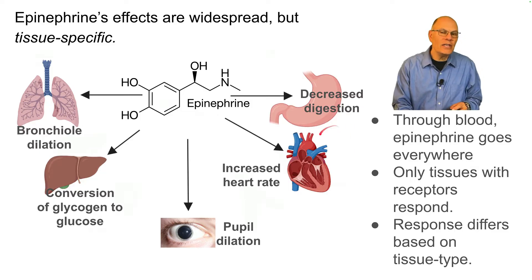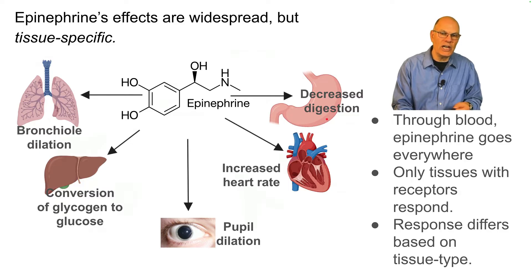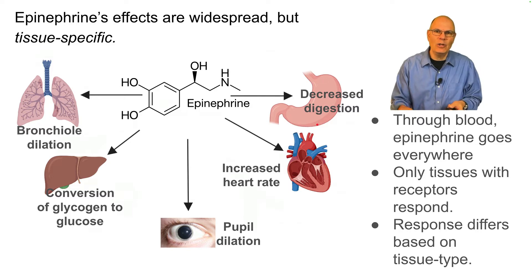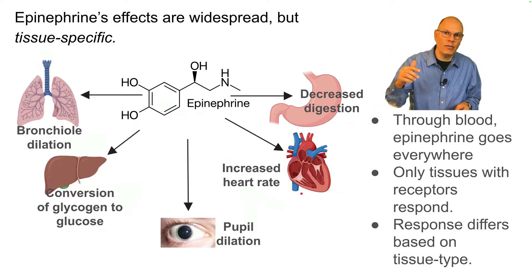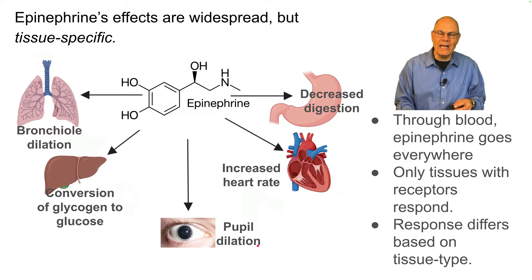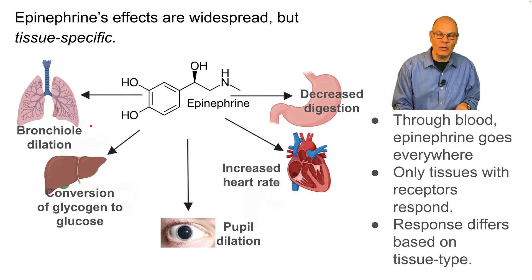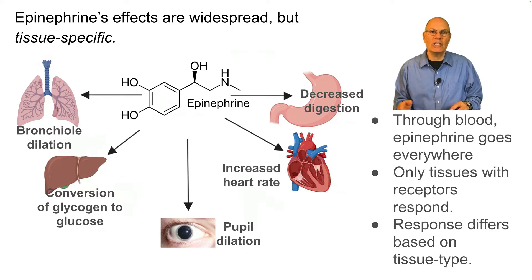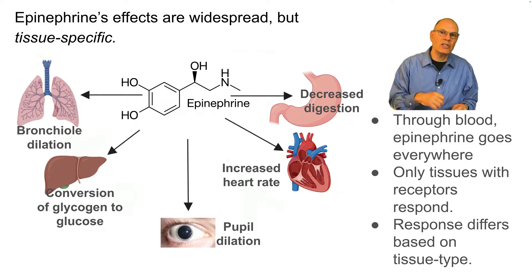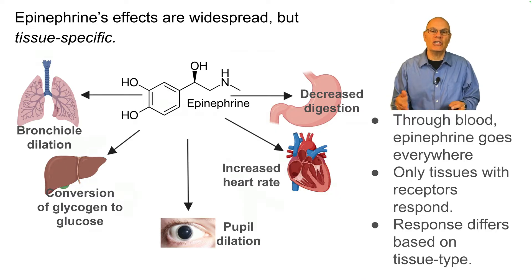All of these are adaptations that are part of the fight or flight response. It will decrease digestion, because when you're trying to fight off some mortal threat, you don't need to be digesting at that moment. You want to increase your heart rate to deliver more food and oxygen to your cells. Pupil dilation gives you more light and better senses. Conversion of glycogen to glucose gives your muscle tissue more energy to fight or flee, and bronchial dilation allows you to get more oxygen into your lungs.